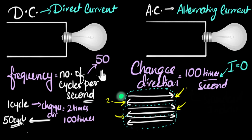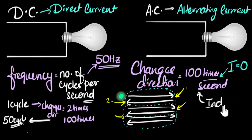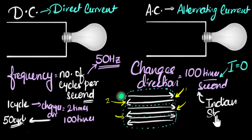Cycles per second is also often called Hertz, named after the scientist Heinrich Hertz. So if the current changes direction or goes to zero 100 times per second, the frequency is half of that — 50 Hertz. Since this is the standard chosen in India, everywhere in India we get about 50 Hertz frequency of alternating current.